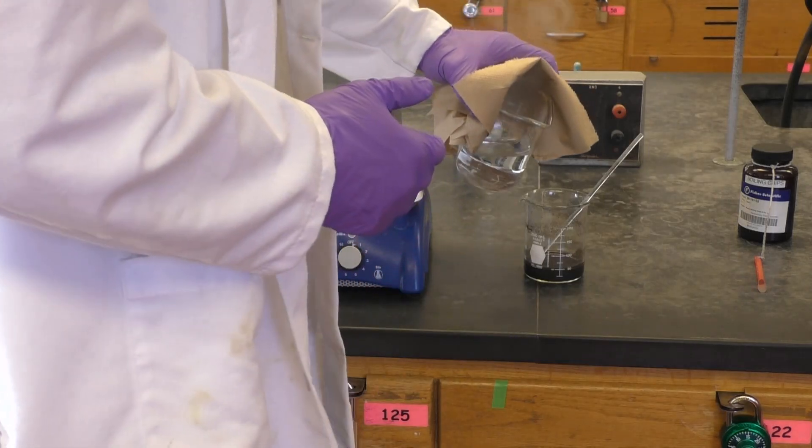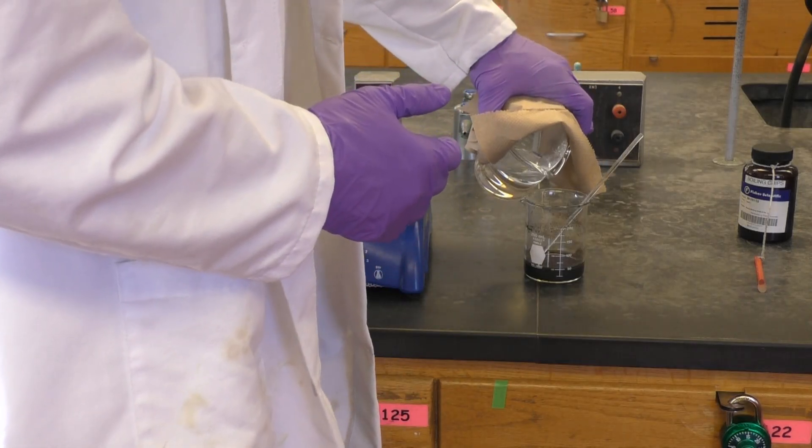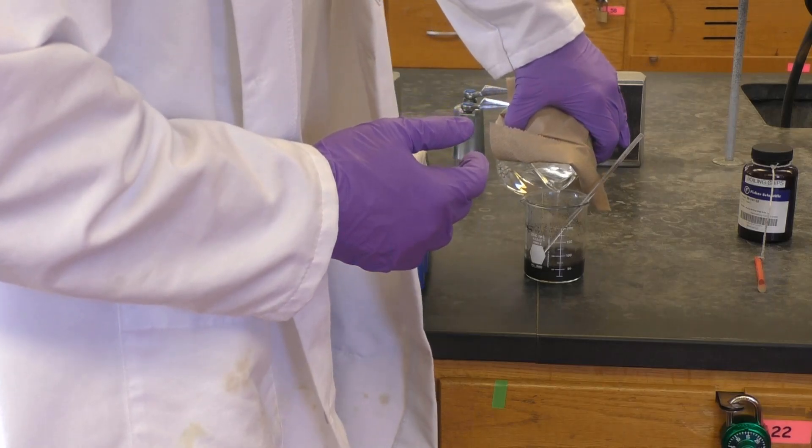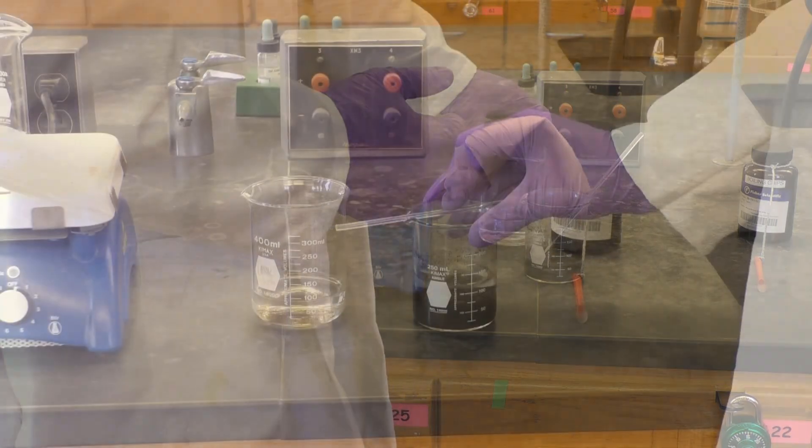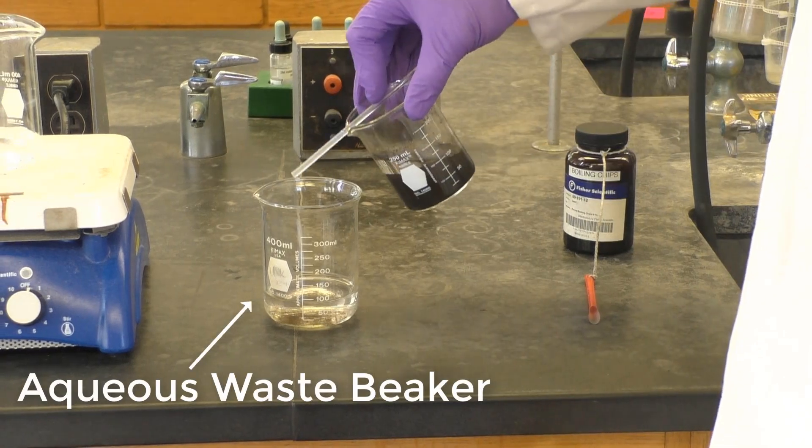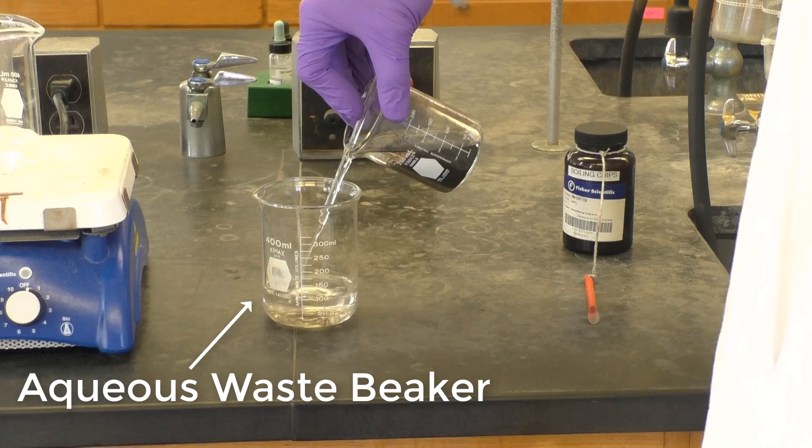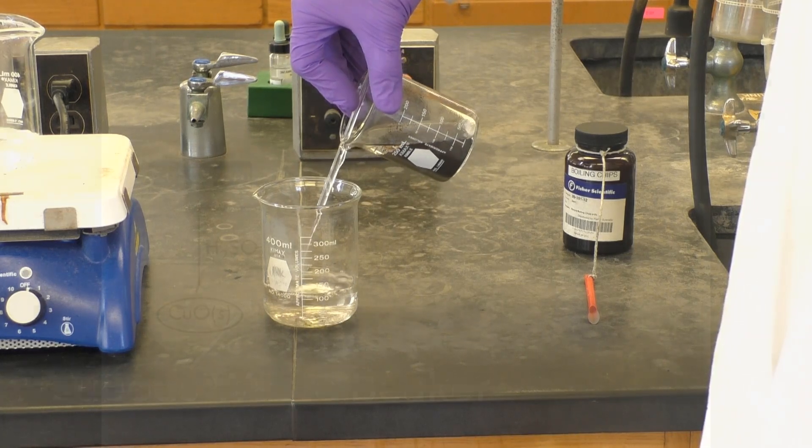We now want to make sure all of these undesired compounds are separated from our product, so use the water you heated earlier to rinse your copper-2-oxide. Just add the hot water to your flask, stir, allow the black solid to settle, and decant. Repeat this rinsing once more to really make sure all you have in your flask is clean copper-2-oxide.